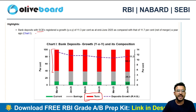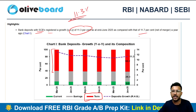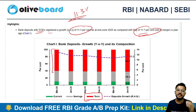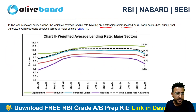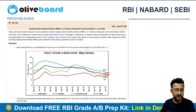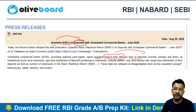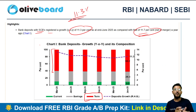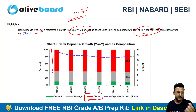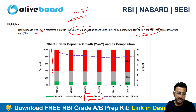Bank deposits with scheduled commercial banks registered a growth rate of 11.3%, compared to 11.7% previously — a very slight decline. On the deposit side, the decline is much smaller compared to the credit side, where growth fell significantly from 15% to 9.9%. Bank deposits are still healthy at 11.3%, just slightly lower than the previously reported 11.7% year-on-year.